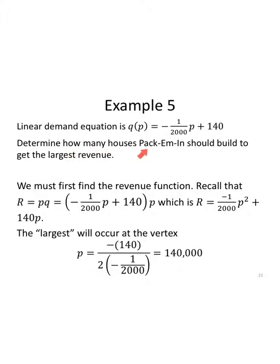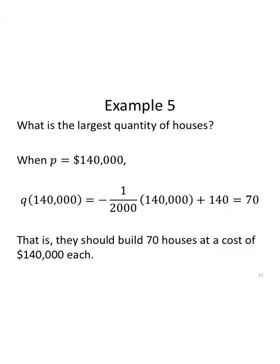But it said determine how many houses they should build. This is a price. This does not tell us to build 140,000 houses. No. The largest quantity of houses, I want to find the quantity. If the price is 140,000, I use the demand equation that we came up earliest or came up with earlier to find that they should have 70 houses at a cost of 140,000 each in order to maximize their revenue.